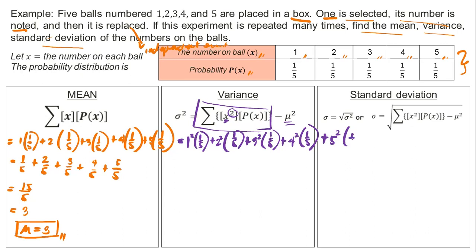Let's solve. 1 squared times 1/5, plus 2 squared times 1/5, plus 3 squared times 1/5, plus 4 squared times 1/5, plus 5 squared times 1/5. That's 1 times 1/5, plus 4 times 1/5, plus 9 times 1/5, plus 16 times 1/5, plus 25 times 1/5. Then subtract mu squared, which is 3 squared.